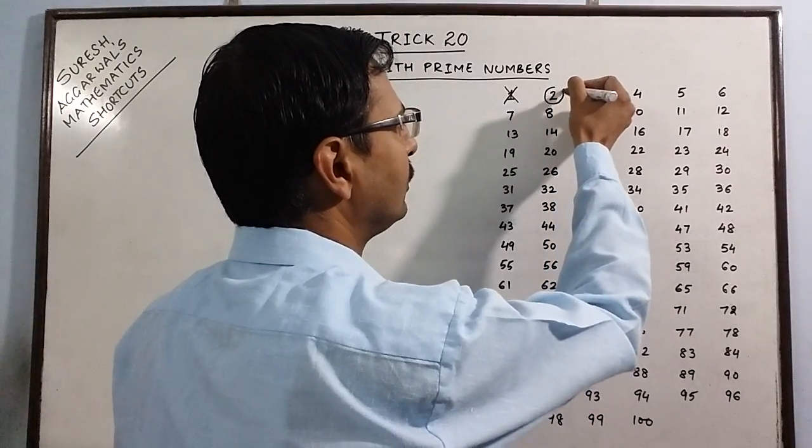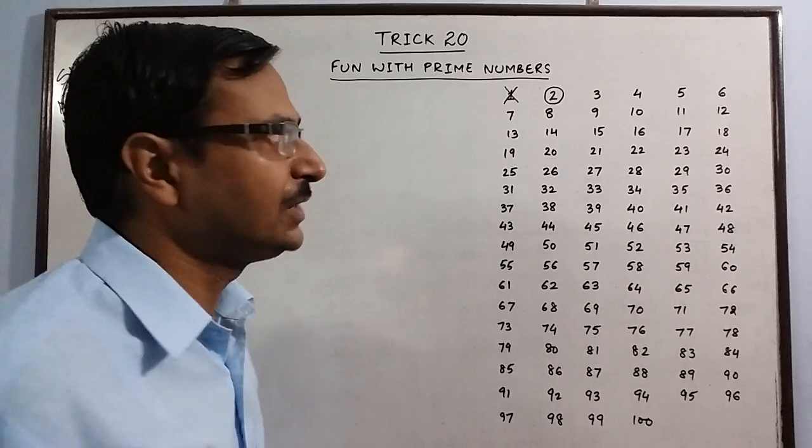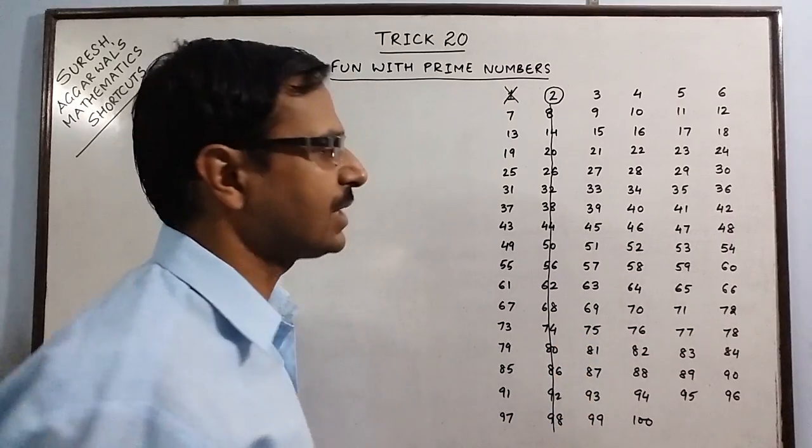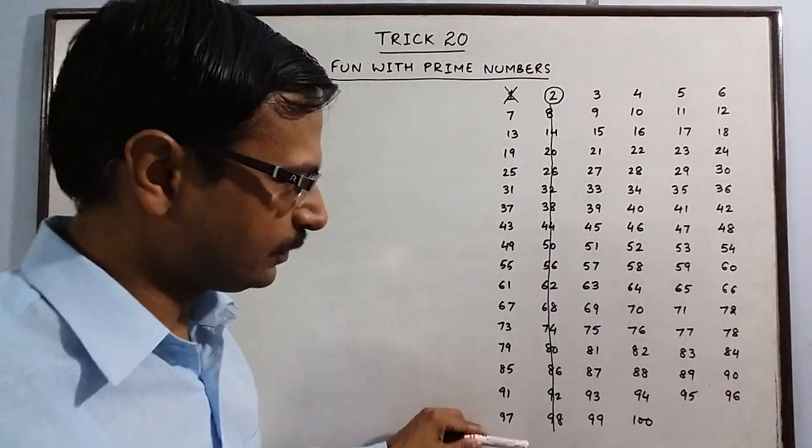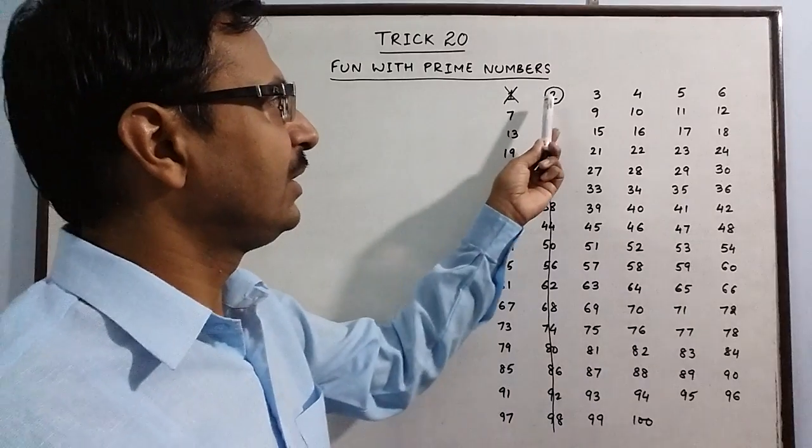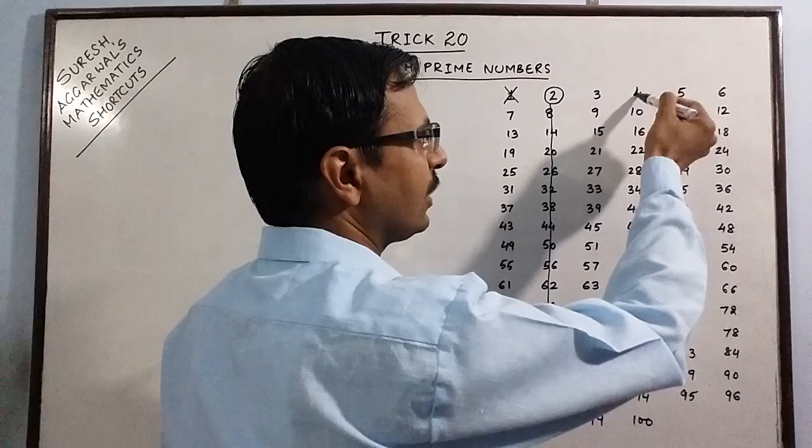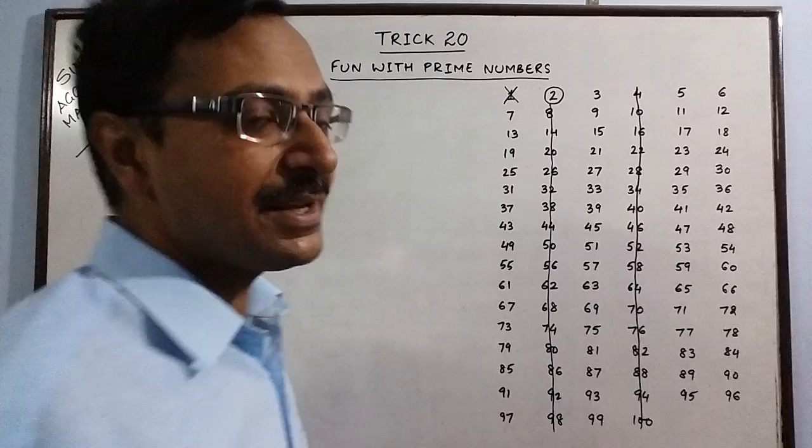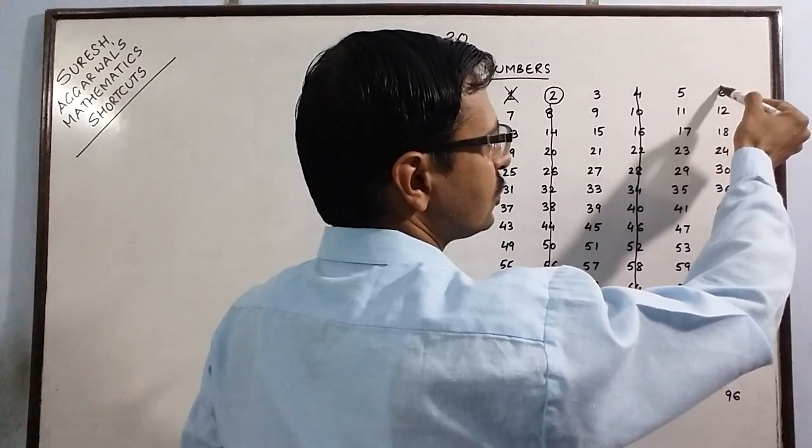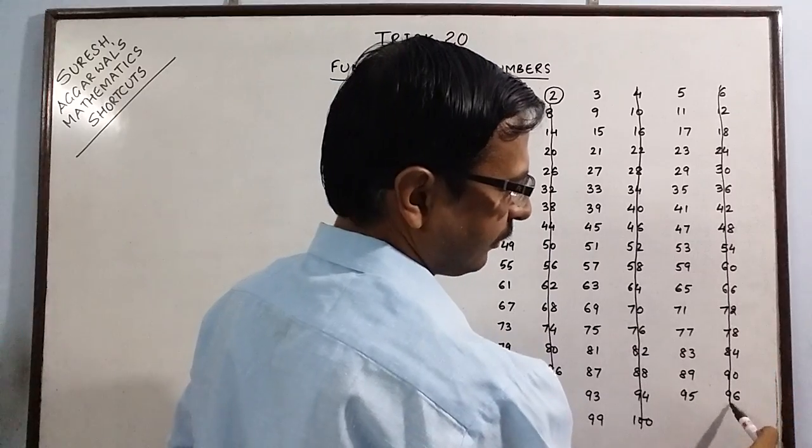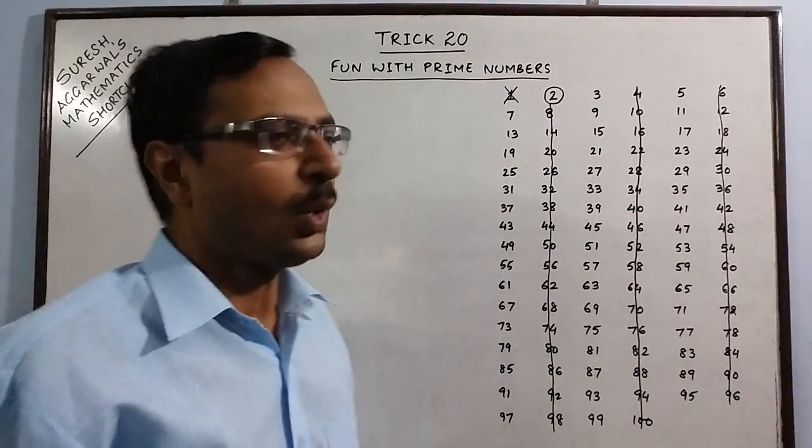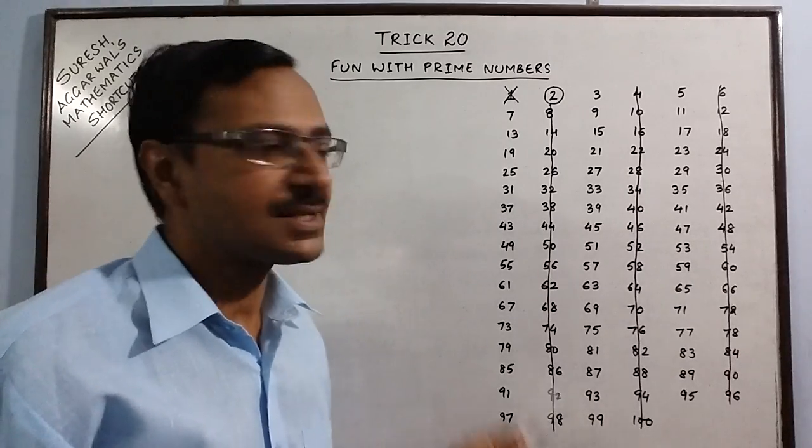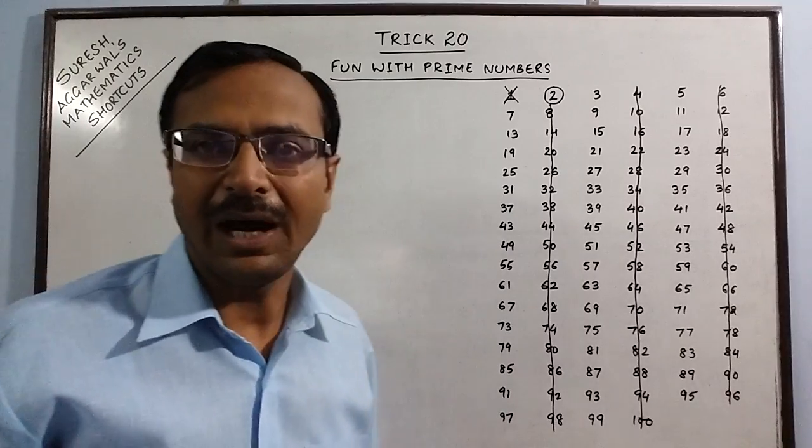We encircle 2 because 2 is a prime number and we strike off all the numbers in this column because all these numbers are even numbers divisible by 2. Similarly, 4 is divisible by 2, so we strike off all numbers which occur in this column as well. Similarly, 6 is divisible by 2, so all numbers in this column are also struck off. So we are left with only 3 columns now. So all the prime numbers are going to exist in these 3 columns only. That solves half of our problems.